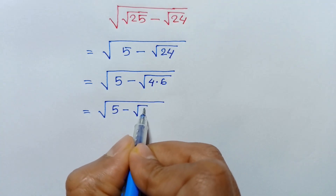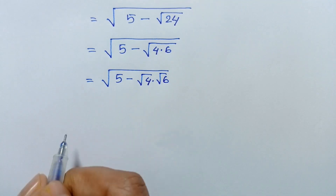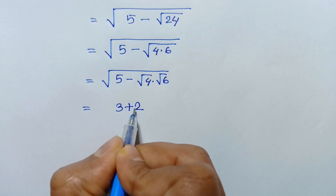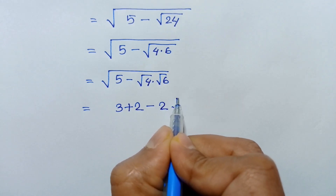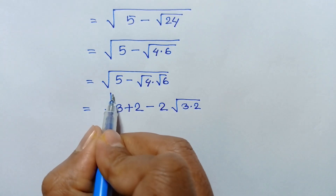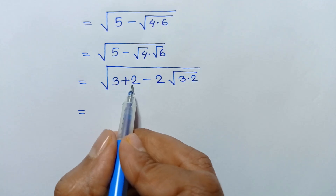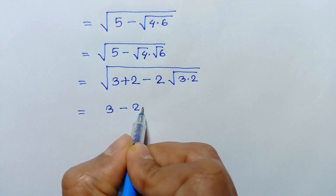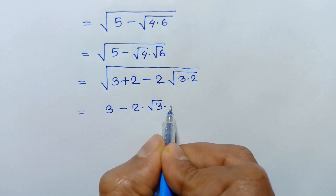Square root of 4 times 6 can be written as square root of 4 times square root of 6. Now 5 is written as 3 plus 2, and square root of 4 is 2, so square root of 6 is square root of 3 times 2. Rearranging, we can write 3 minus 2 times square root of 3 times square root of 2.